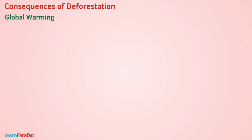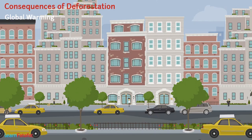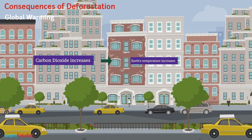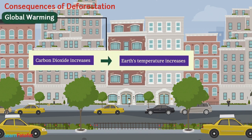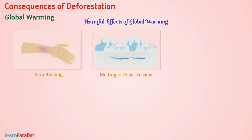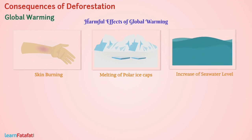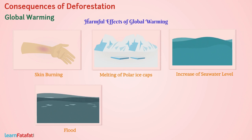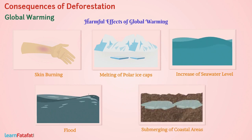Global warming. Deforestation leads to an increase in the quantity of carbon dioxide in Earth's atmosphere. This leads to an increase in Earth's temperature — this is global warming. It causes harmful effects like skin burning, melting of polar ice caps, increase of seawater level, floods, and ultimately the submerging of coastal areas.